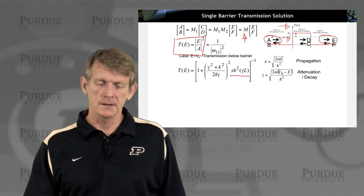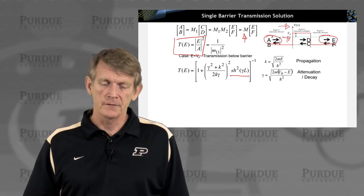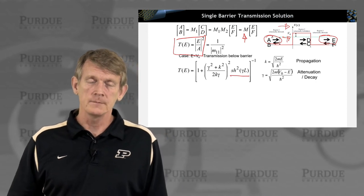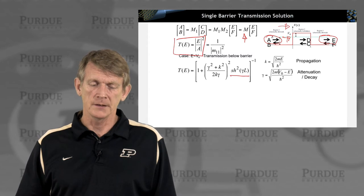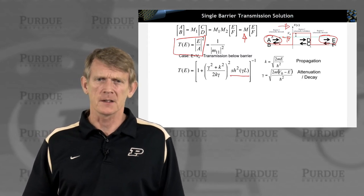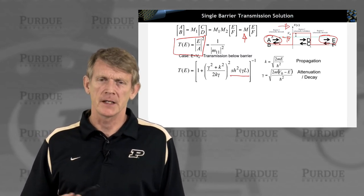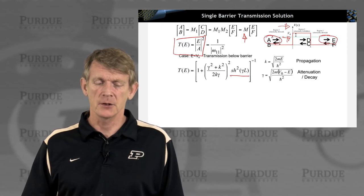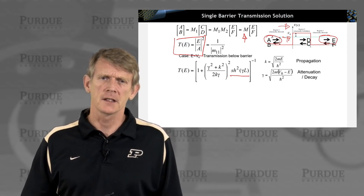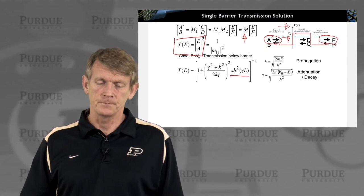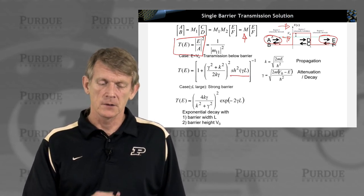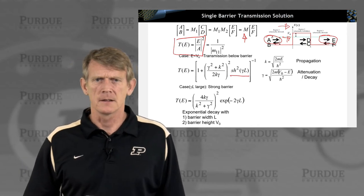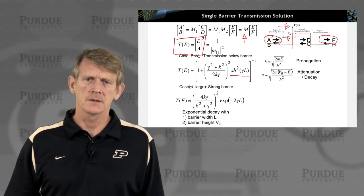It is interesting that the maximum of this transmission can be 1. What you have here is 1 over 1 plus something, and if that something gets small, then you have a coefficient that can be close to 1.